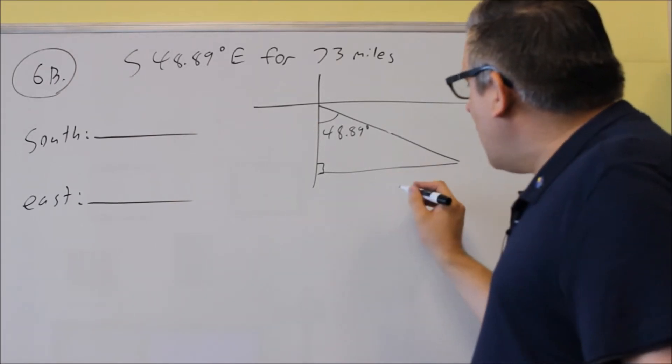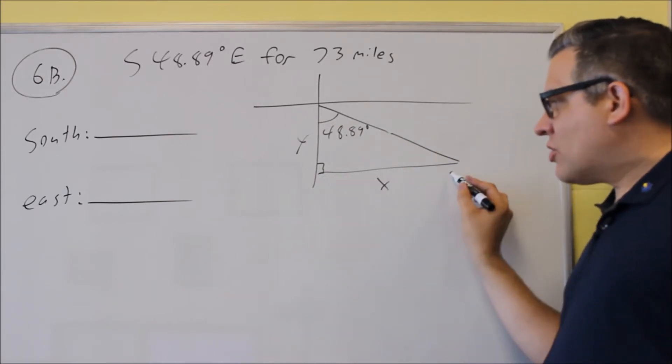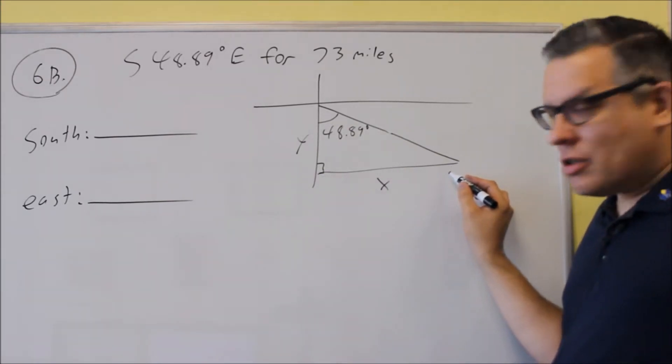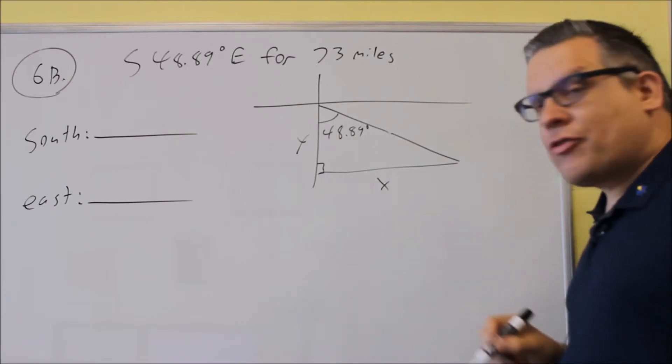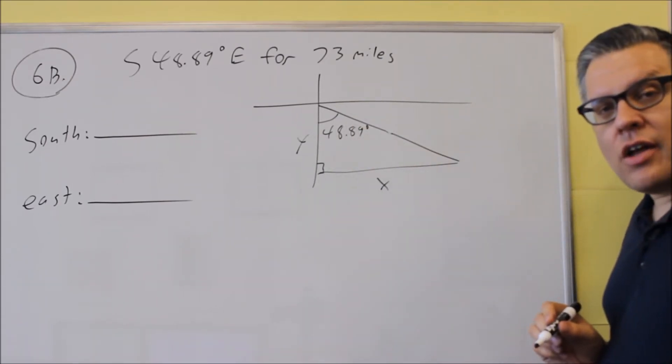How far south and east? Okay, so that would be here. The x distance, that'll be how far east it's going. The y would be how far south it's going. So we created a triangle based on that.